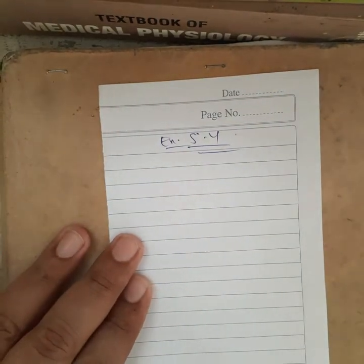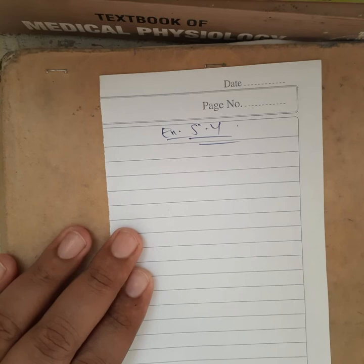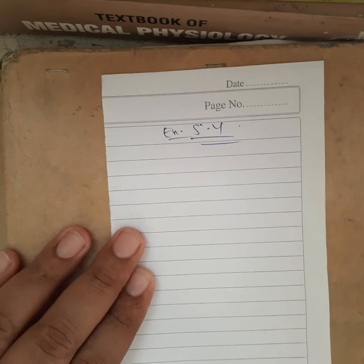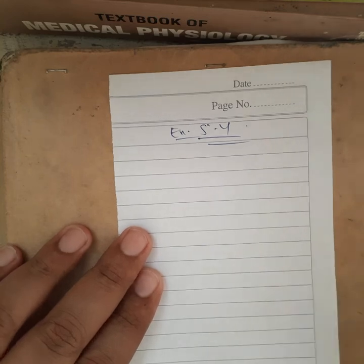Now in this video we will solve the questions of exercise 5.4. In the first question, you have to find out the discriminant and hence you have to determine the nature of the roots.